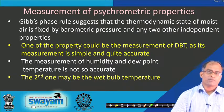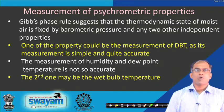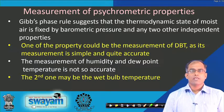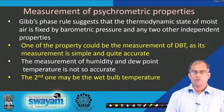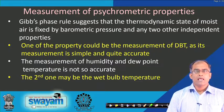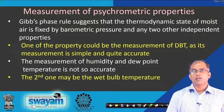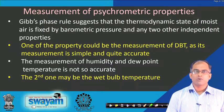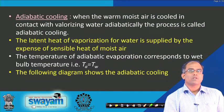Measurement of psychrometric properties: the Gibbs phase rule indicates that the thermodynamic state of moist air is fixed by barometric pressure and any two other independent properties. One property is typically the dry bulb temperature, whose measurement is simple and accurate. The measurement of humidity and dew point has greater uncertainty, so the second property is often the wet bulb temperature measured with a wet bulb thermometer.